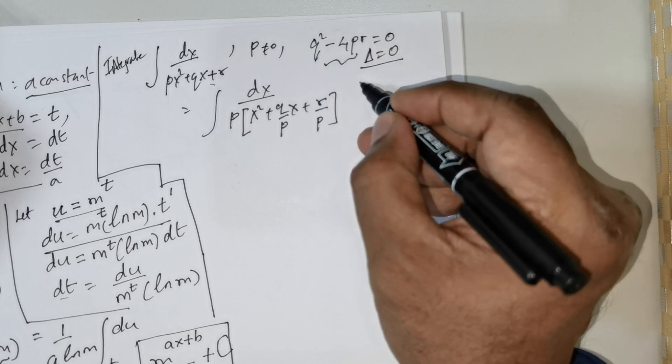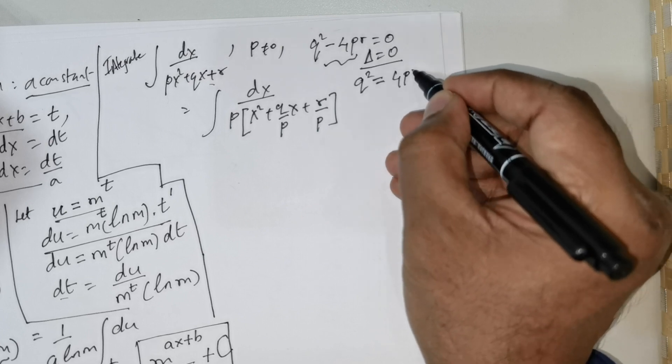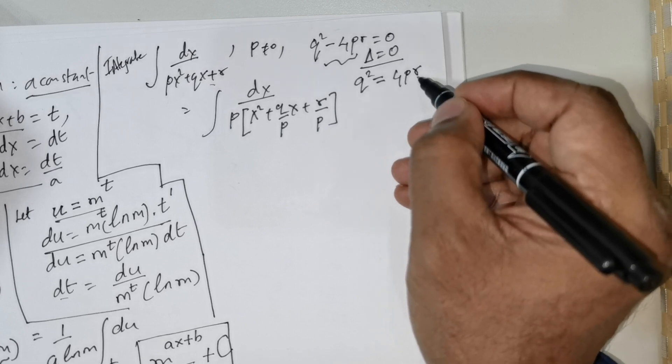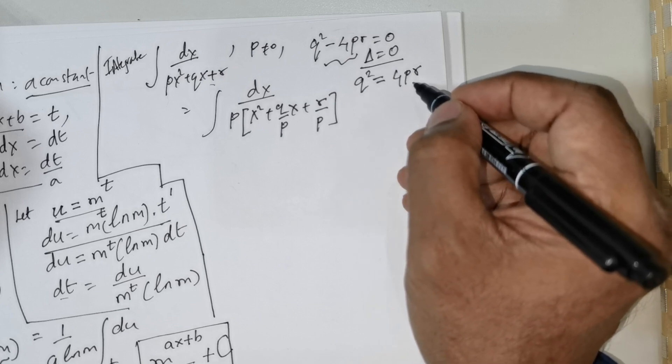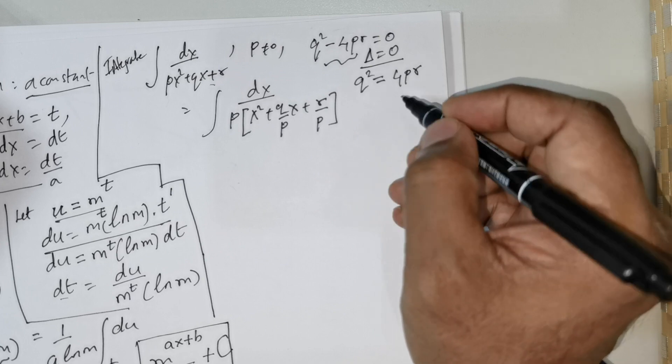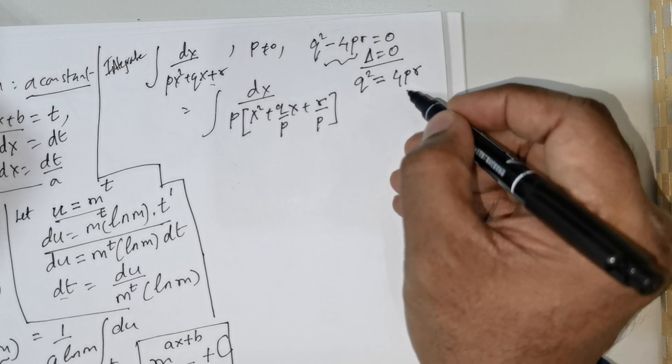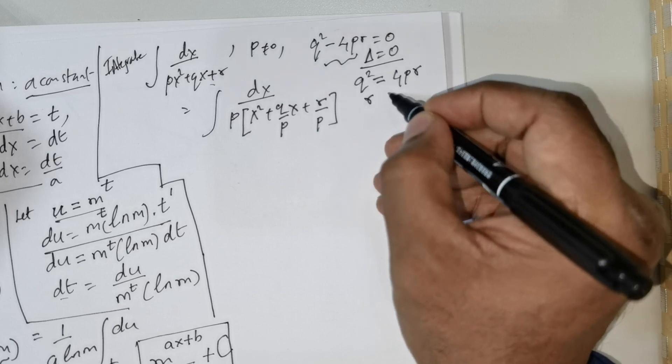Now what I will do is rewrite the given condition. From here I can say q squared equals 4 times pr. I want to express every quantity with regard to r being an independent variable.